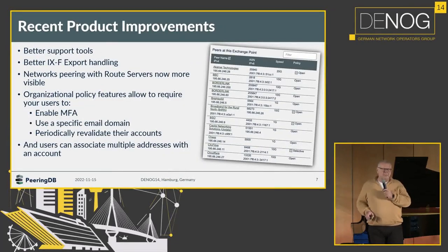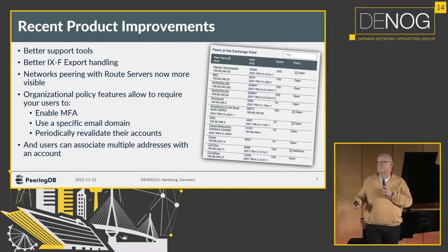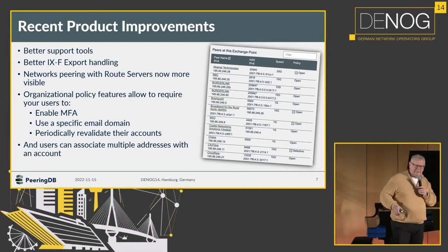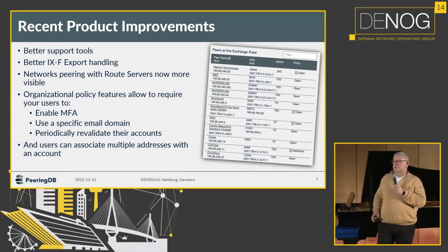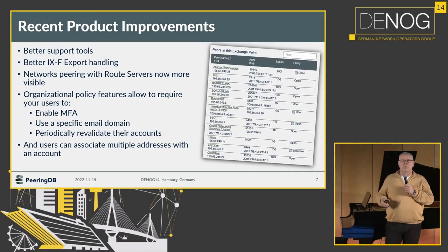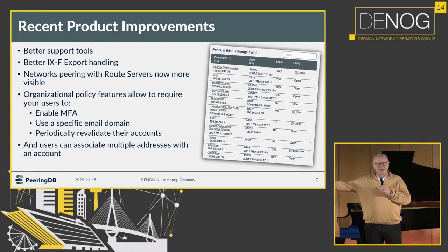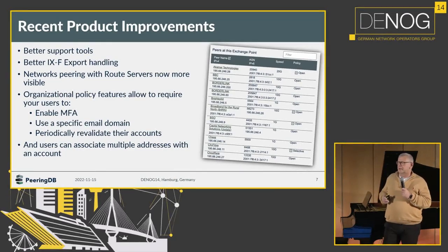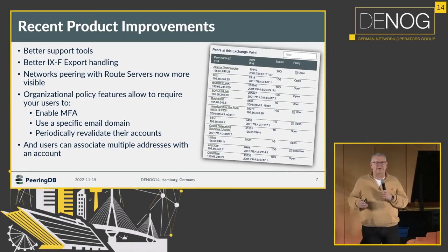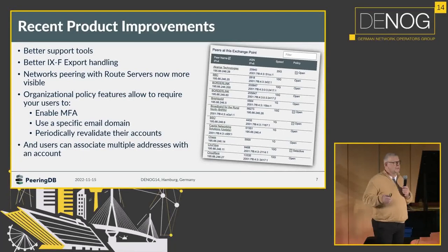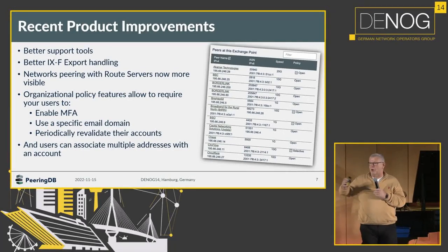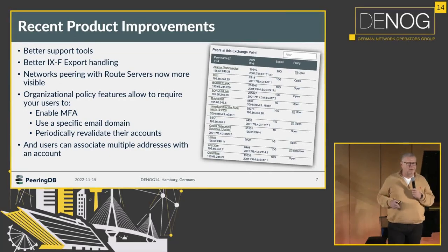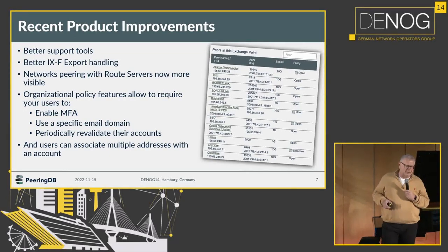Product improvements include better support tools for the admin committee. We also import the so-called IXF exports from Internet Exchanges. This is a JSON format where Internet Exchanges can list all their participants with relevant data. We import this data and cross-check it against what we have in our database, since the PeeringDB paradigm is that networks specify whether they are at an Internet Exchange and provide IP addresses. We use this IXF import to double-check against that.